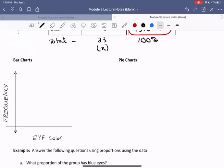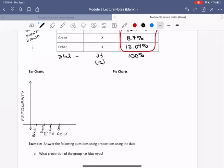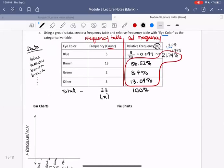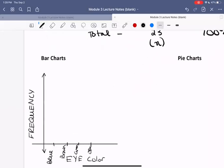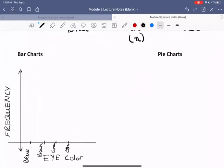And then now on the horizontal axis, I'm going to place all three or four rather of my categories. So my categories include blue, brown, green, and other. And then I notice that the frequency, the largest frequency I have is brown with 13. So I want to make sure my frequency, the scale here goes up to 14, 13.